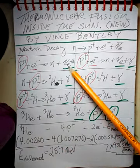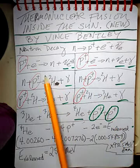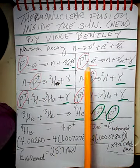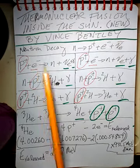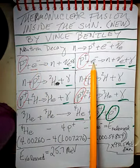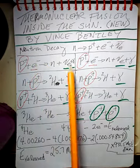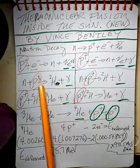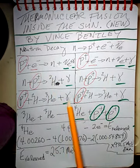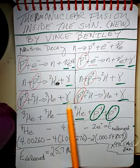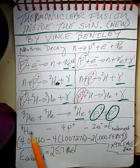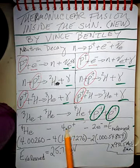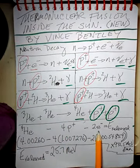Four protons have disappeared. On top of that, it also costs the Sun the two electrons here and here. So it costs the Sun two electrons and four protons. The inputs are four protons and two electrons, and the total output is the helium-4 nucleus that was created, plus whatever energy is released.